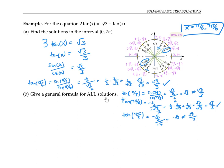Now if I want to find all solutions, not just those in the interval from zero to two pi, I noticed that I can take one of these principal solutions and add multiples of two pi to it, because that'll give me the same angle. So I get pi over six plus two pi k, and seven pi over six plus two pi k, for k any integer.